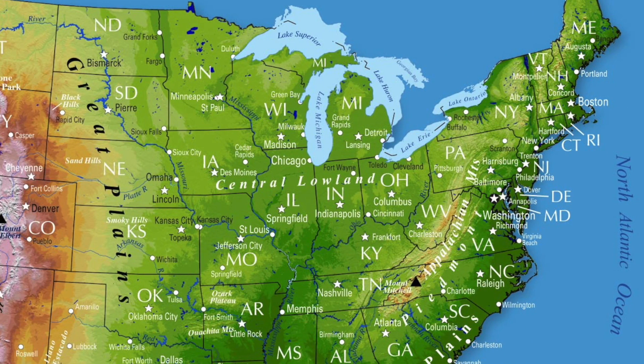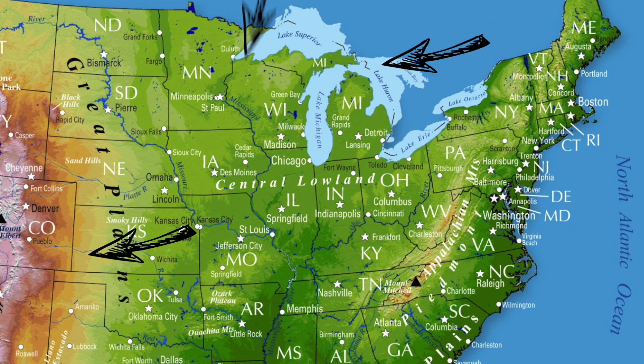Based on the map, I can tell that the Midwest has mostly flat land, with some hills and the beginnings of mountains over here in the west. I also see the Great Lakes and some rivers in this region. Awesome. Let's keep going and learn about climate maps.